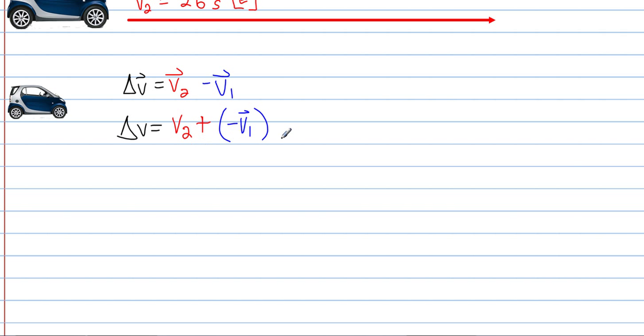Another way of writing this expression is simply to add the opposite. In mathematics, what we can do is we can simply take V2 and we can add it to negative V1. These two expressions mathematically are the same. So, delta V is really equal to the sum of two vectors.